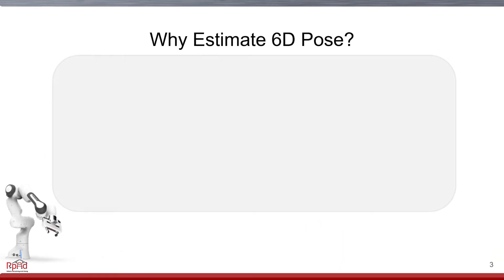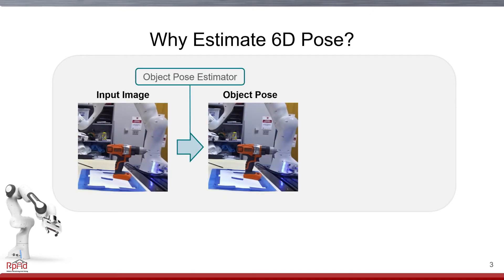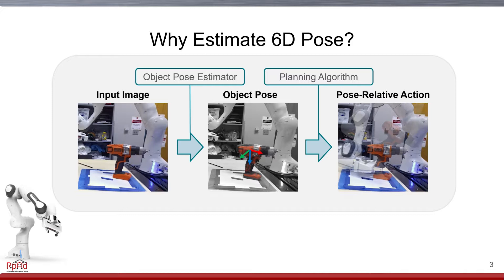6D Pose estimation is particularly useful in many object-centric planning algorithms. Given an input image of the scene, object position and orientation is estimated using an object Pose estimator, then used by a planning algorithm to perform a Pose relative action on that object.